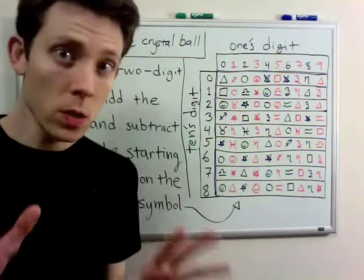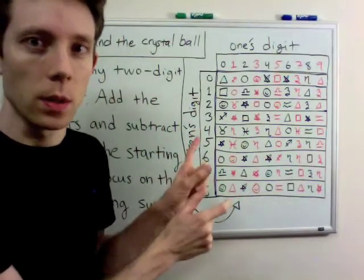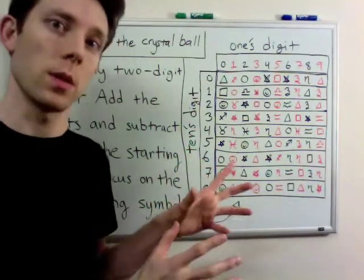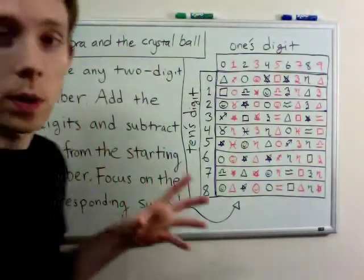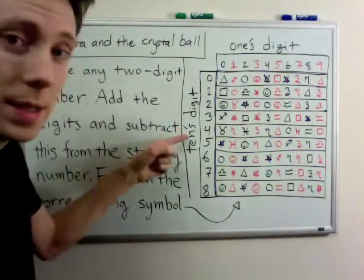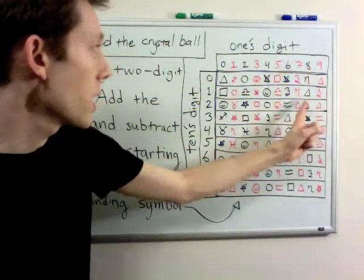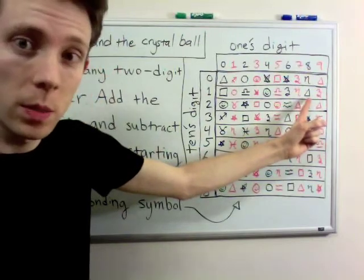Now what I need you to do is look at this chart here and focus on the symbol that corresponds to your number. So, for example, I got 18. What I would do is look at the tens digit for 1 and then the ones digit for 8, and I'll end up with this symbol right here.